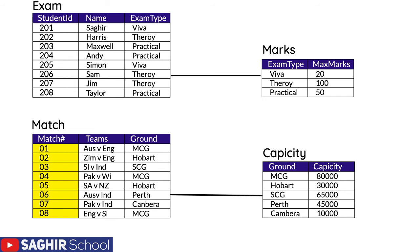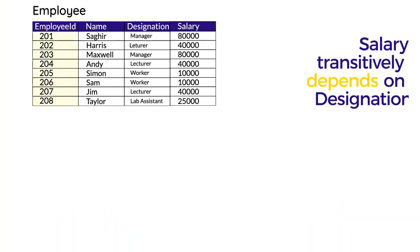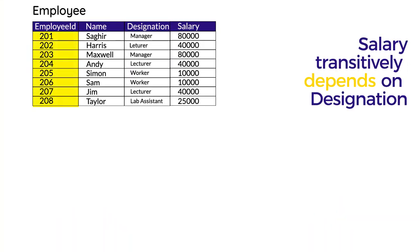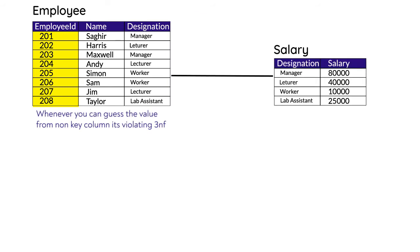We'll break the table, taking away the transitive part — capacity — and putting it in another table. In the last example, if someone's designation is manager, the salary will be 80,000. In a database table, if there is any transitive dependency between the non-key columns, we'll only break the part that is transitively depending on the other part.